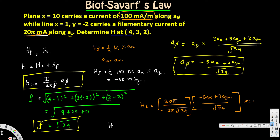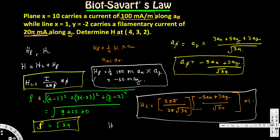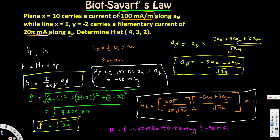H_L has x and y components, H_ρ has only a y component. Adding them together: H_L simplifies to -1.47 milli a_x + 0.88 milli a_y, and H_ρ = -50 milli a_y. The final answer is H = -1.47a_x - 49.12a_y milliampere per meter.